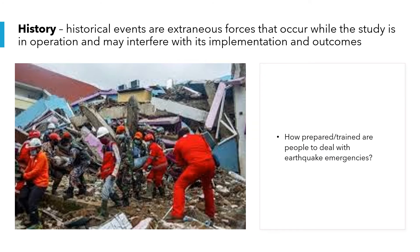The third threat is history — historical events that are extraneous forces occurring while the study is in operation and may interfere with its implementation and outcomes. For example, if you are studying how well people are trained to deal with earthquakes, but some participants actually went through a real earthquake and learned better from experience compared to others who only trained without experiencing one, that comparison is unfair and is affected by history.